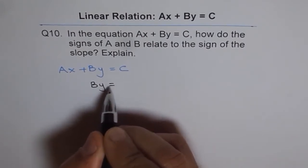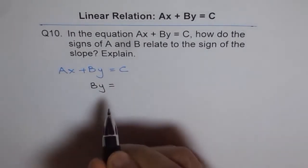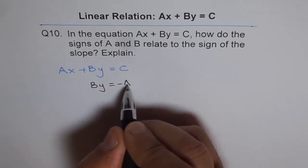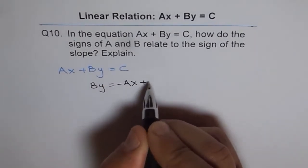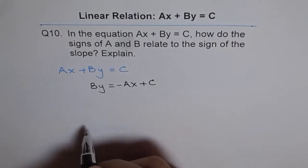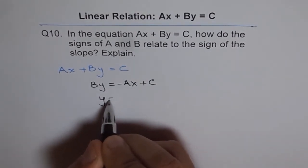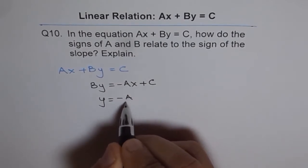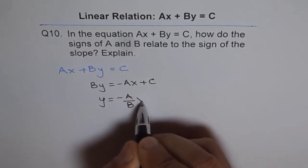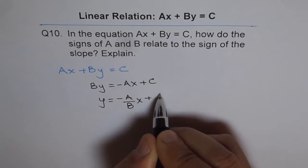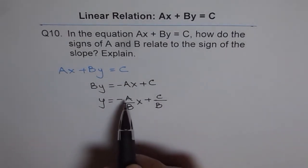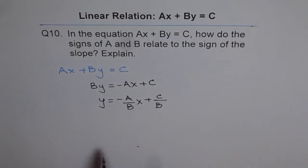We have BY equals to, we will take this term, or both sides, we can do minus AX. So we get minus AX plus C. We are trying to isolate Y. Now, let's divide by B, both sides. We get minus A over B times X plus C over B. So, we get Y equals to minus A over BX plus C over B.